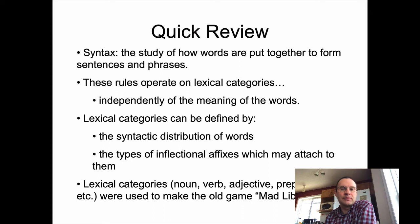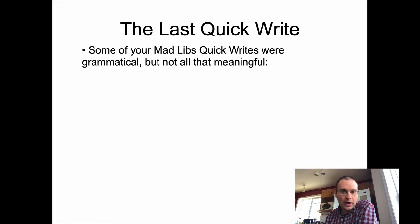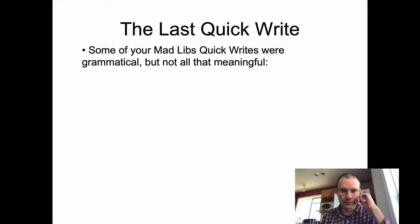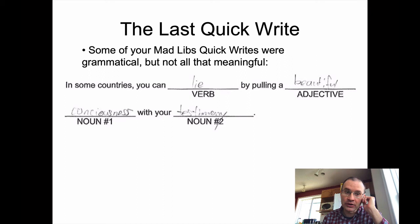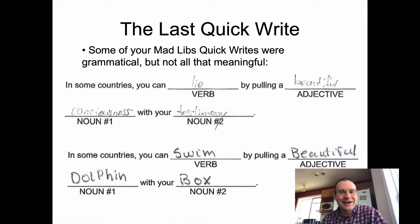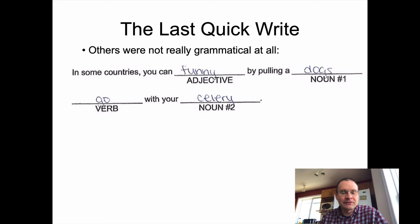These lexical categories were what were used to make the old Mad Libs game work. Hopefully you did the previous quick write, because it's supposed to be kind of fun but also kind of confusing. These are Mad Libs from a previous class to demonstrate the point of that exercise — the goal of Mad Libs is to create unexpected sentences using words in the appropriate lexical categories. So this person had: 'In some countries, you can lie by pulling a beautiful consciousness with your testimony' — which is maybe something that could work in a poem. This person had: 'In some countries, you can swim by pulling a beautiful dolphin with your box.' People like the adjective 'beautiful,' it seems.